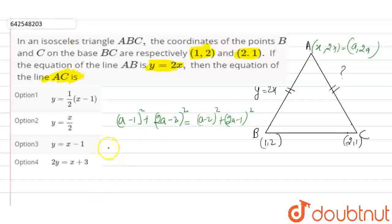We will open the brackets: A squared plus 1 minus 2A plus 4A squared plus 4 minus 8A equals A squared plus 4 minus 4A plus 4A squared plus 1 minus 4A.